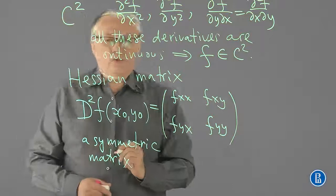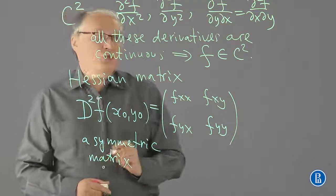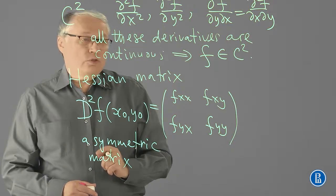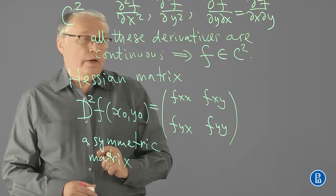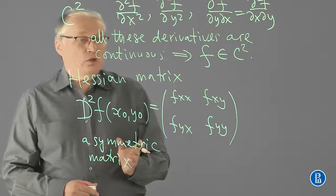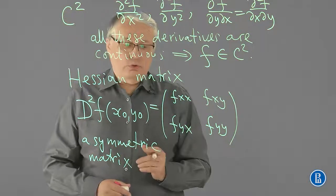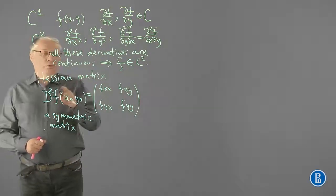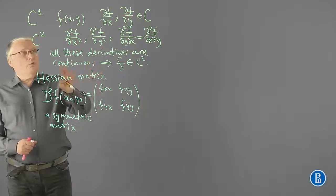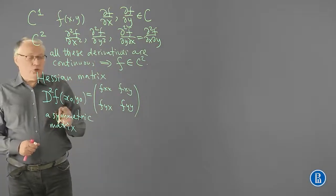This matrix will be used in optimization theory to check whether a point we find with the help of the first-order conditions is really a maximization point or minimization point. We were considering case of x and y, only two variables.